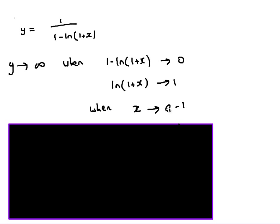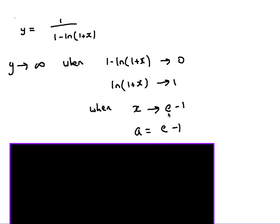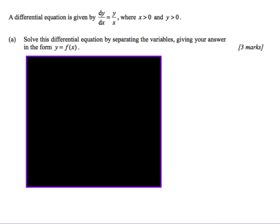That's e to the power of 1 take away 1 — not e to the power of minus 1. When x approaches this value, we get closer and closer to infinity on the y value. The question asked what number x approaches, labelling it as a, so my final answer is a equals e take away 1. That was the first question. Now let's look at another question — quite interesting because we can actually solve it in three different ways.